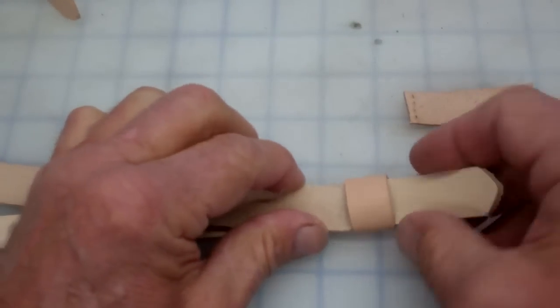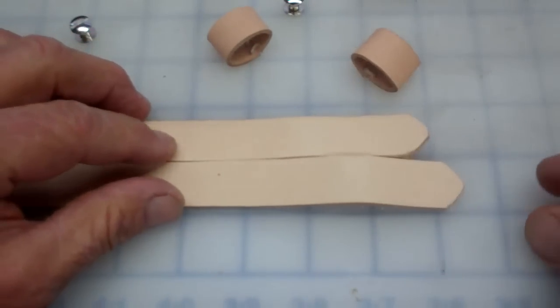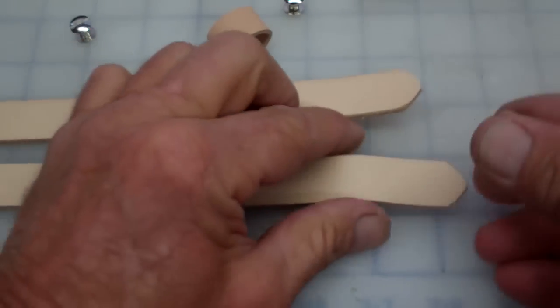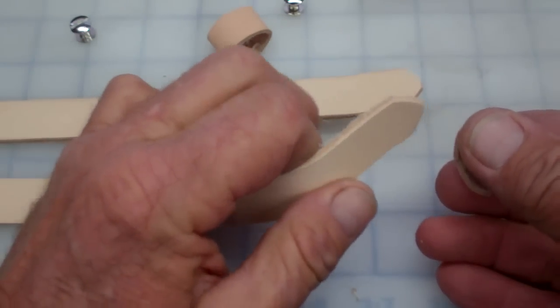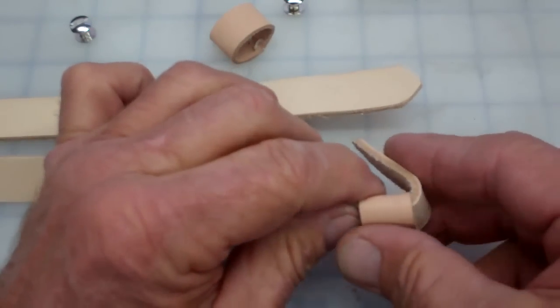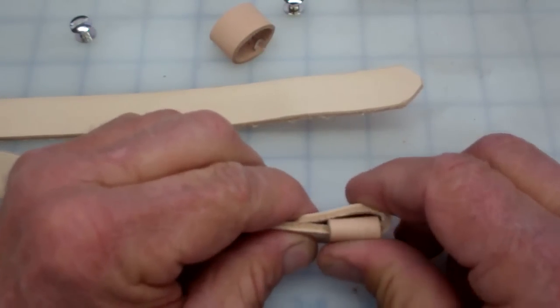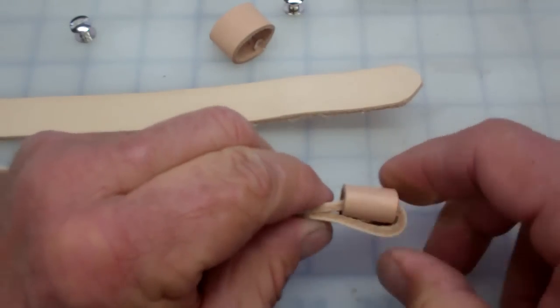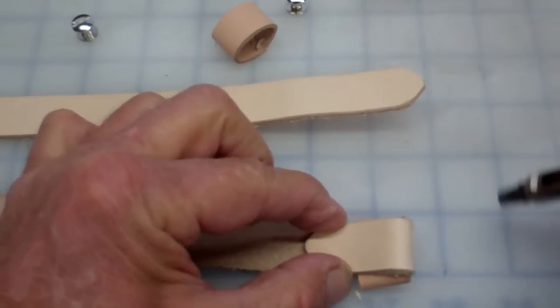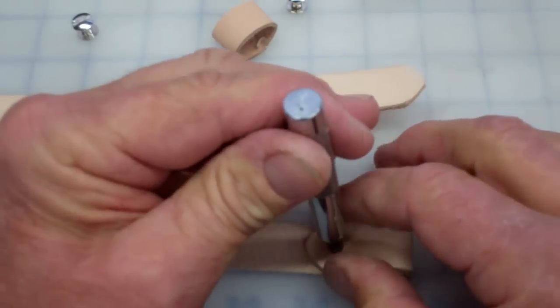Okay, we have both of our belt keepers made, and now we're going to attach them to the ends. We're going to slip one on, and then we're going to fold over the end, as you see there. And we'll just do a hole punch in the end here.